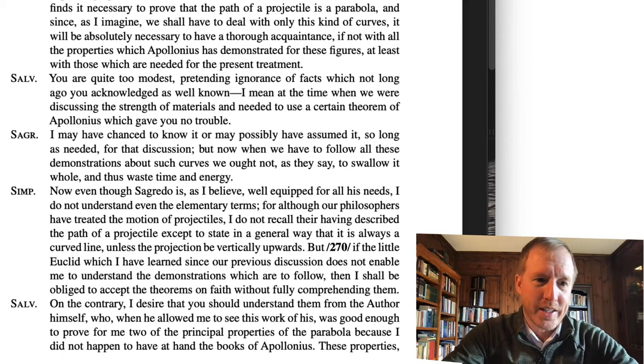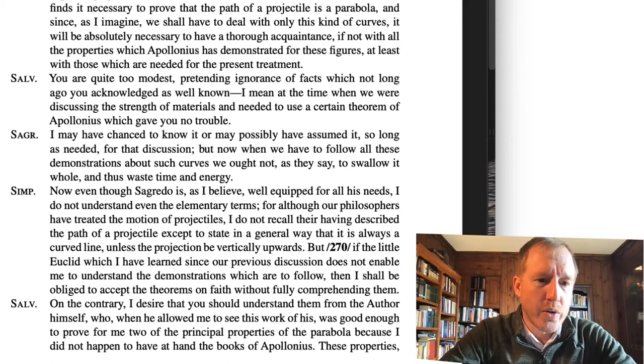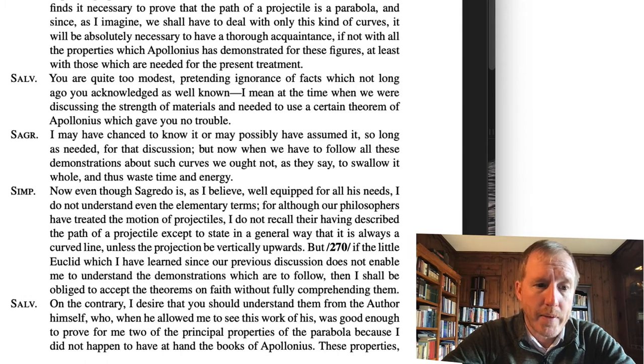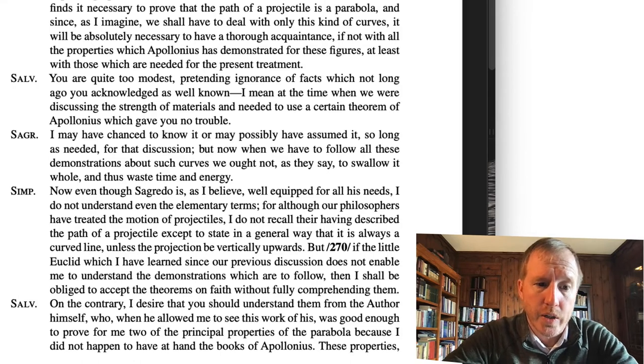And then Simplicio chimes in: Now, even though Segredo is, as I believe, well equipped for all his needs, I do not understand even the elementary terms. For although our philosophers have treated the motion of projectiles, I do not recall their having described the path of a projectile except to state in a general way that it is always a curved line unless the projectile be vertically upward. But if the little Euclid which I have learned since our previous discussion does not enable me to understand the demonstrations which are to follow, then I shall be obliged to accept the theorems on faith without fully comprehending them. So he says, I've studied a little bit of Euclid. You might remember Euclid is another Greek geometer. And ever since we've been having these discussions I've gone back and read some Euclid, but I'm going to be lost if we don't get a better handle on the conic sections in Apollonius.